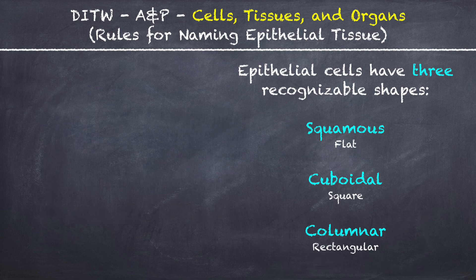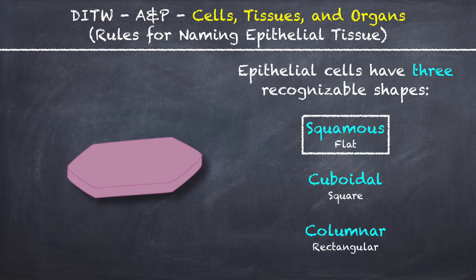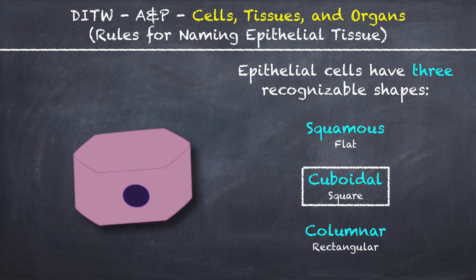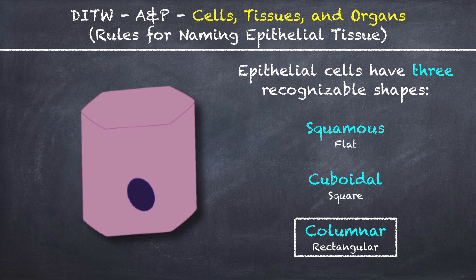Epithelial cells have three recognizable shapes. Squamous, which is a flat cell. Cuboidal, which is more of a square-shaped cell, roughly equal in height and width. And then you also have columnar, which is higher than it is wide.